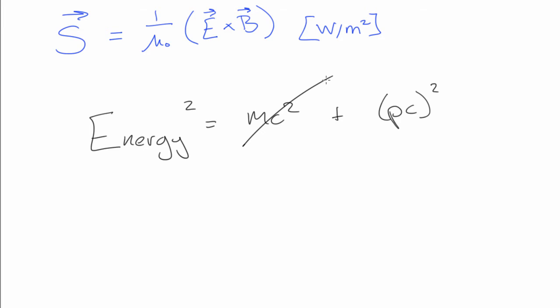So all we're left with is this equation here, where the energy is equal to the momentum times speed c. We can quickly rearrange this to get momentum. So we get the energy on c.